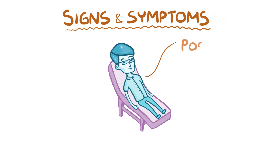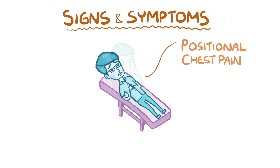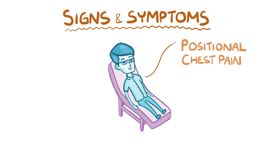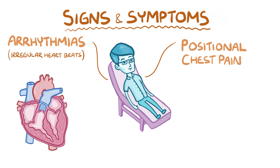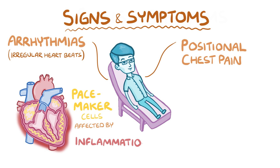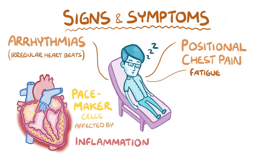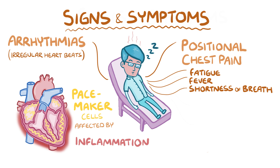Individuals with myocarditis can have chest pain that is sometimes positional, meaning it can get better or worse depending on the body's position. It can also cause arrhythmias or irregular heartbeats because the inflammation affects the pacemaker cells traveling through the myocardium. There can also be more general symptoms like fatigue, fever, and shortness of breath.